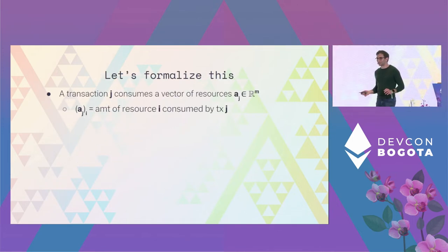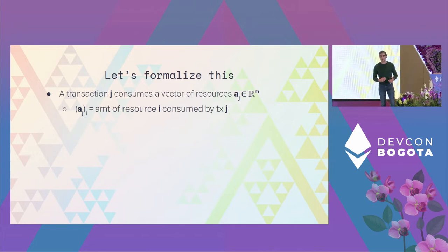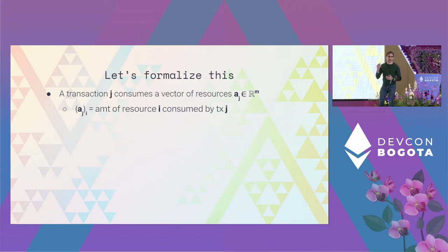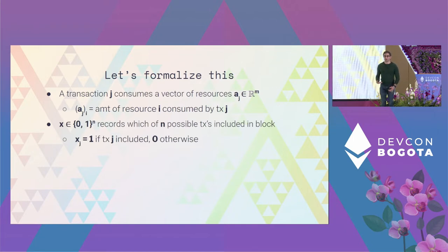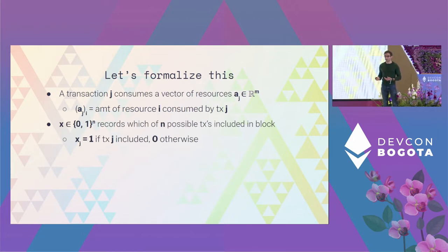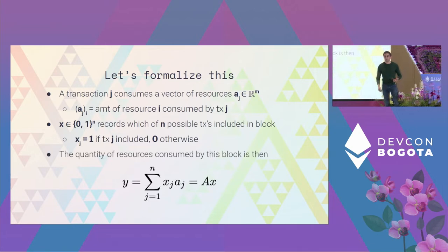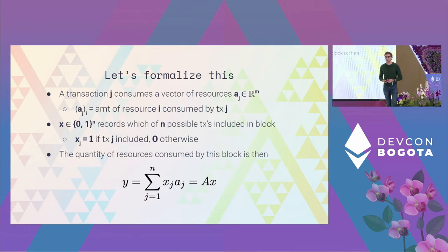To formalize this: a transaction j consumes some vector of resources a_j, where there are m resources, and the i-th element of that vector is the amount of resource i consumed by transaction j. When building blocks, we denote x as the zero-one vector over n transactions — x_j equals one if that transaction is included in a block, zero otherwise. The quantity of resources consumed by a given block is y, computed as the sum of a_j times x_j, expressible in matrix-vector notation where the columns of A are the resource vectors for each transaction.